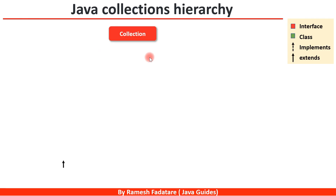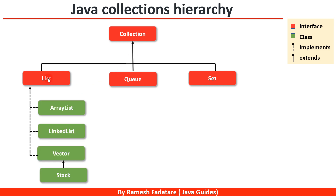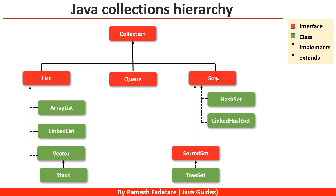Let's take a look at the Java collections framework hierarchy. Collection is the root interface, and List, Queue, and Set are its sub-interfaces — they extend the Collection interface. The concrete implementations of List interface include ArrayList, LinkedList, Vector, and Stack. These are the commonly used implementations of List interface.